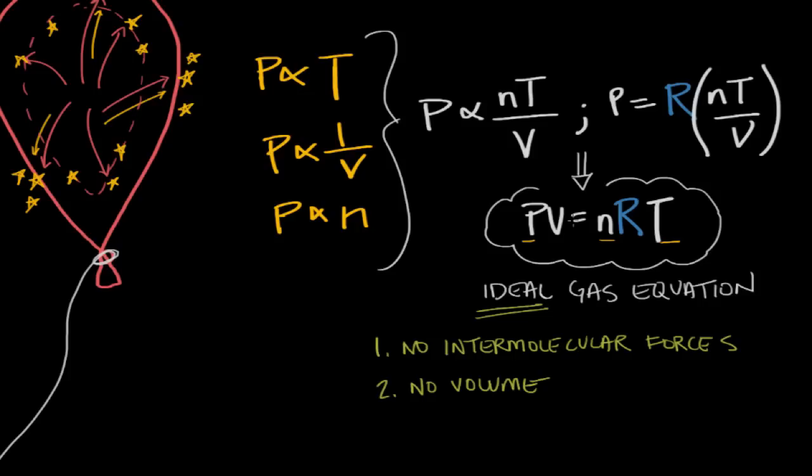But the particles are extremely tiny. So kind of assuming their point masses isn't that far-fetched. And it allows our equation to make sense. So this is an ideal gas, no volume.